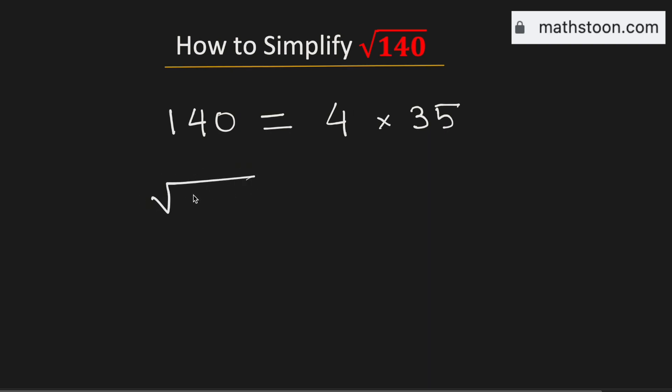Now taking square root on both sides, we get square root of 140 is equal to square root of 4 times 35.